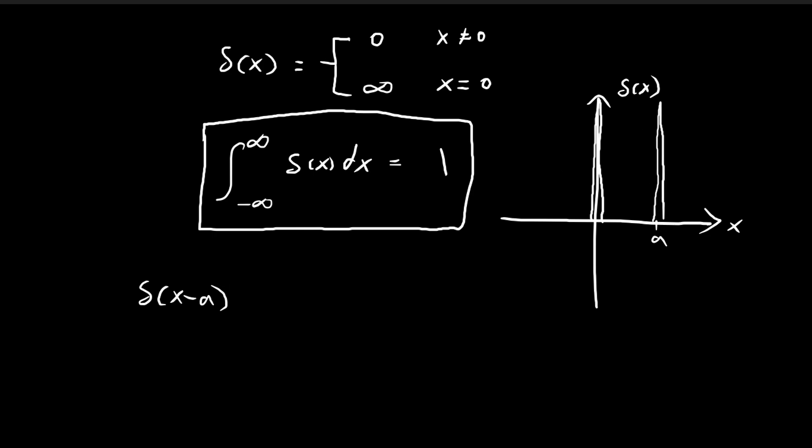Another interesting property to notice is that if we have f of x, some function multiplied by delta of x minus a, this is always equal to f of a times delta of x minus a.